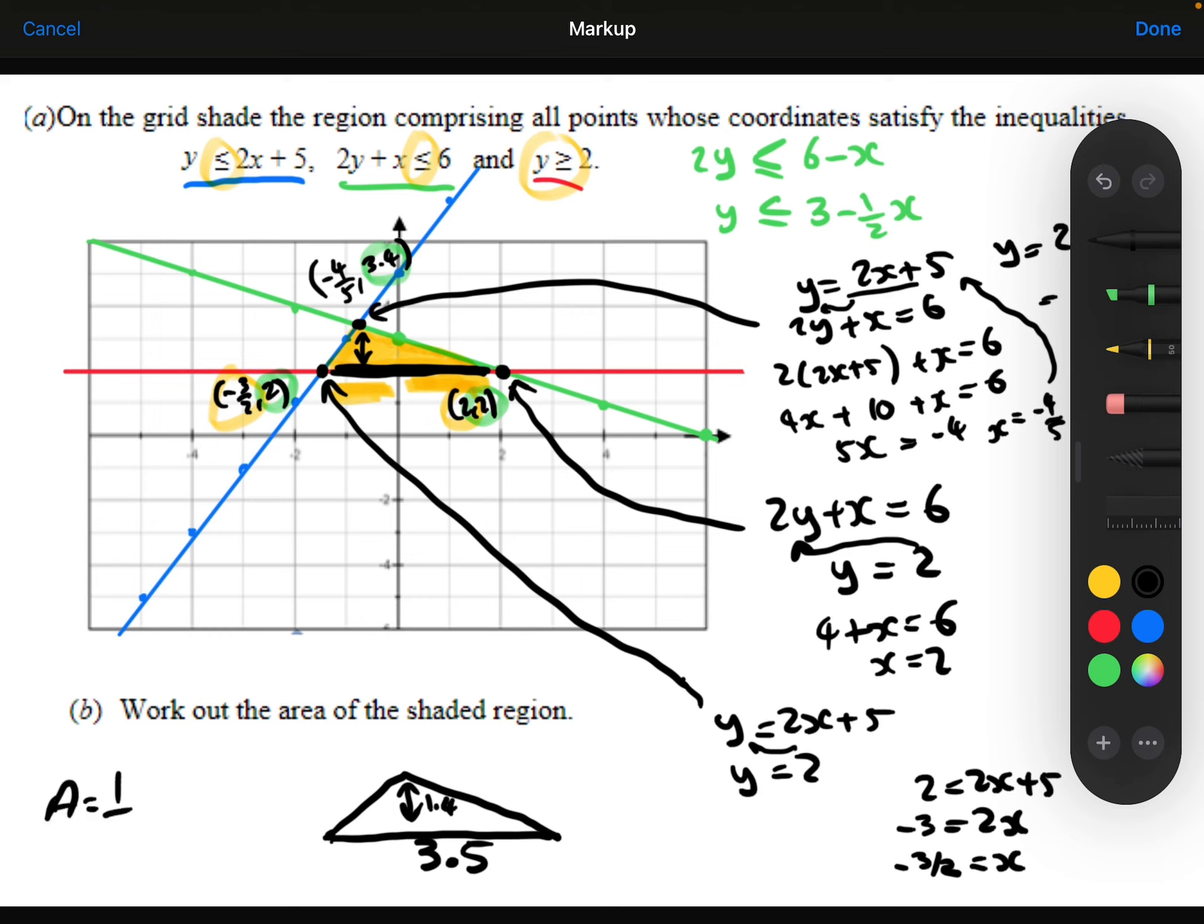So the area of this triangle, 0.5 times the base, times the height, and we get 2.45.